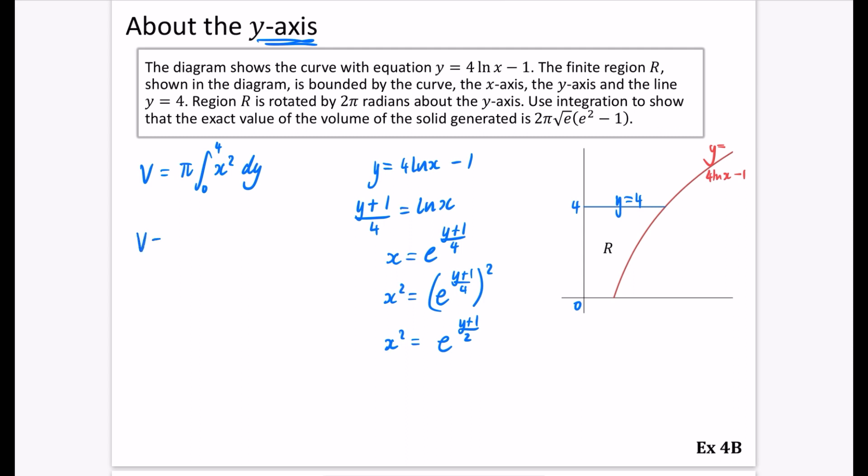So this means to find our volume, we're going to be doing pi multiplied by the integral between 0 and 4 of e to the power of y plus 1 over 2 dy.